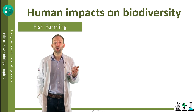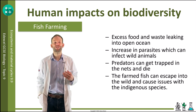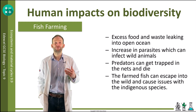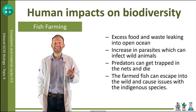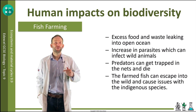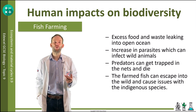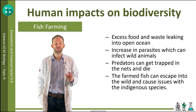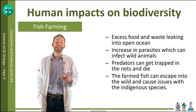Many fish farms are done in open water using large nets with the fish inside. This can create problems such as excess food and waste leaking into the open ocean, an increase in parasites which can infect wild animals, predators getting trapped in the nets and dying, and farmed fish escaping into the wild and causing issues with indigenous species — all of which can impact biodiversity.